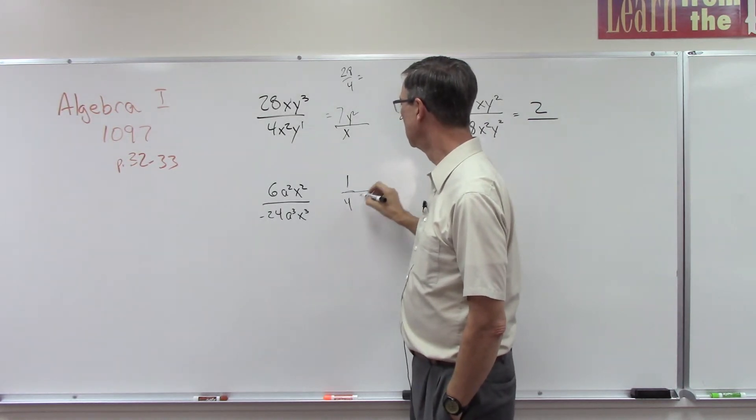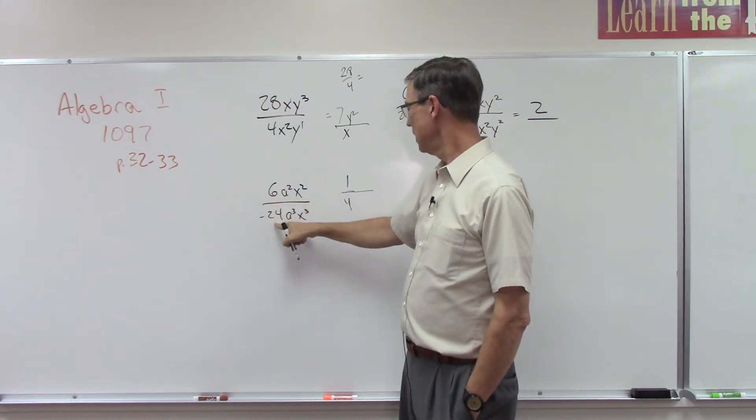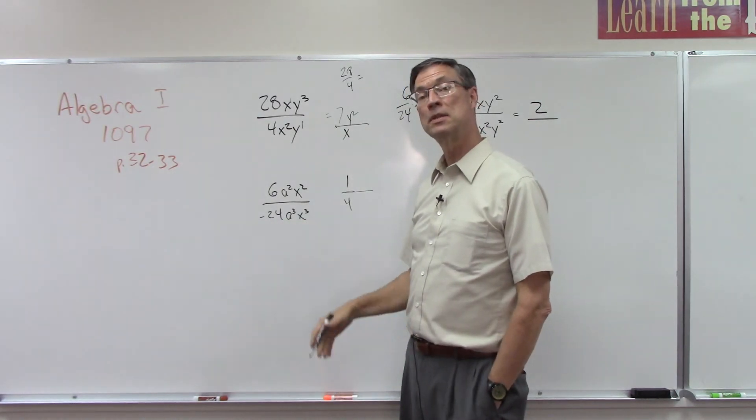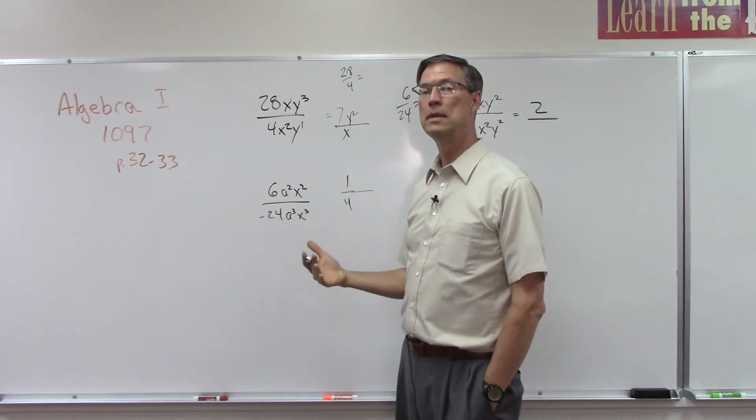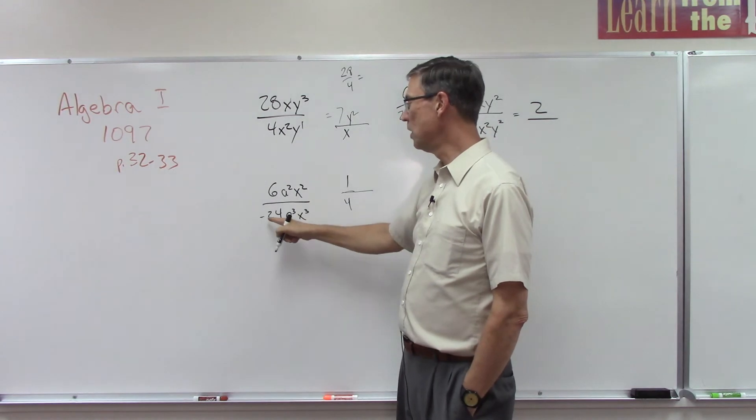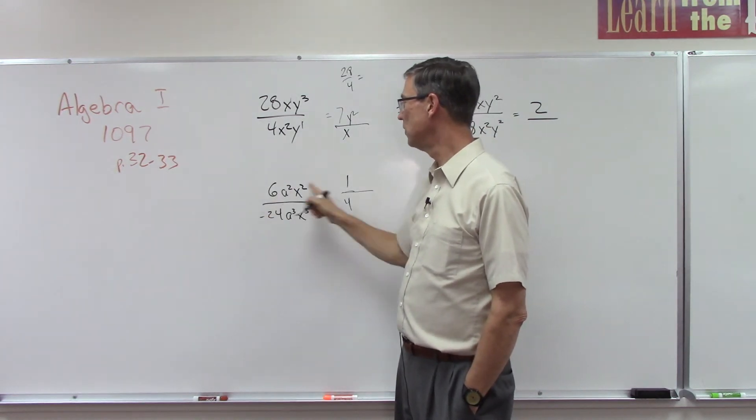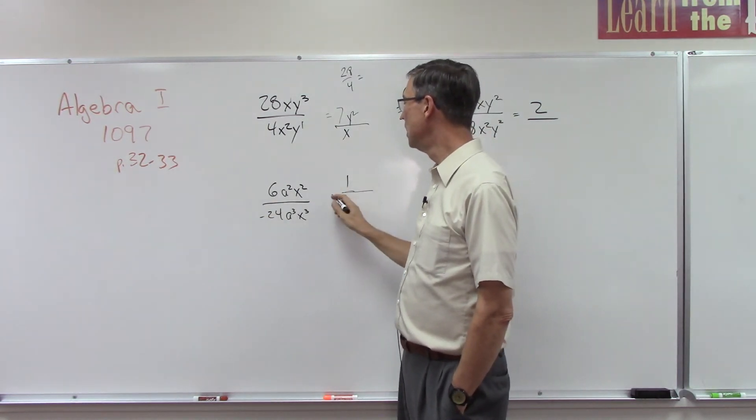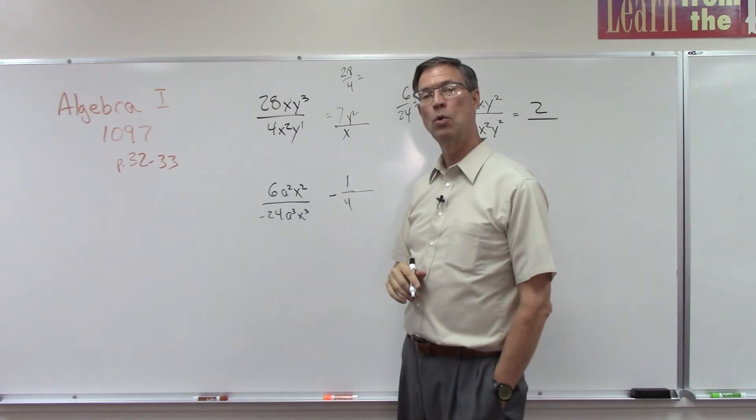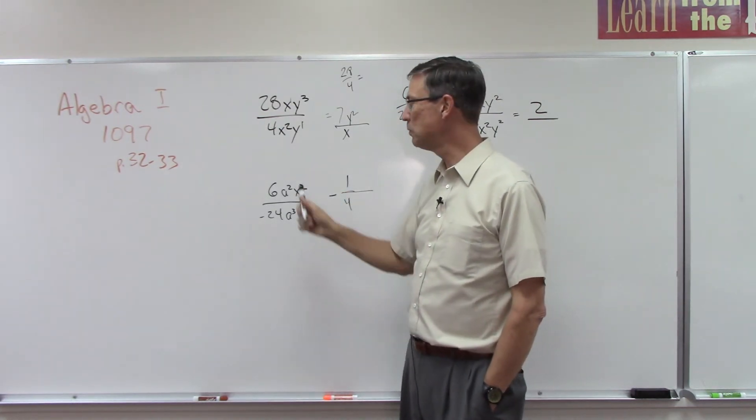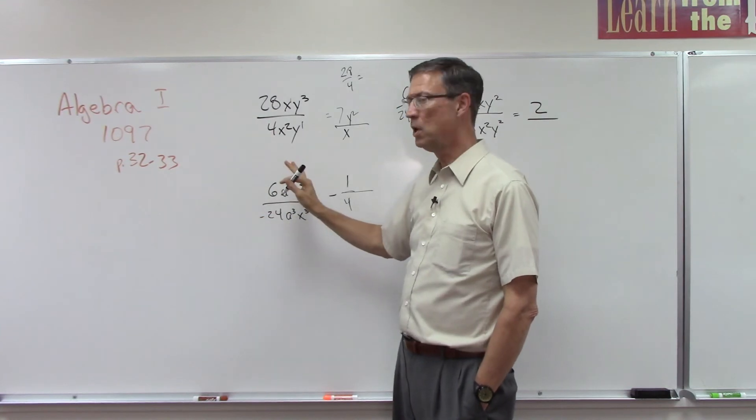The same thing is going to happen here. We're going to draw this line. Now this was a positive divided by negative, so that means the entire answer is going to be negative. We don't worry about should I put the negative up here or down here. What we do in algebra is we put it out in front of the whole answer.